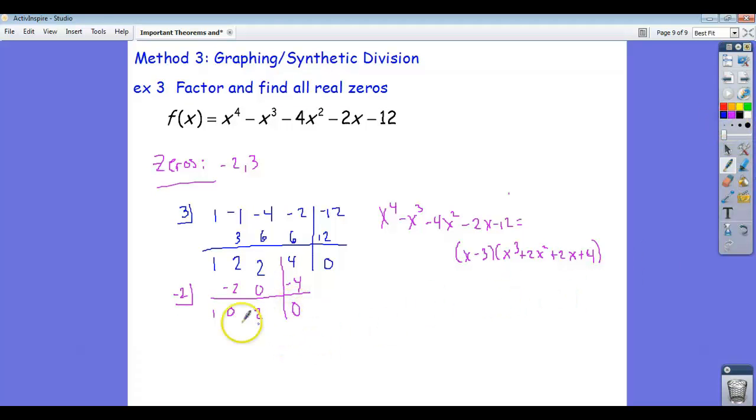So what this means, I'm factoring this whole thing, it gets x minus three, and because negative two is a zero of the polynomial, and I just did synthetic division on this piece here, it means that this can factor now into x plus two times x squared plus two.